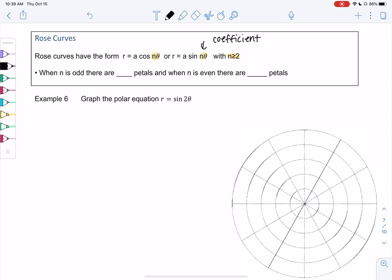They're going to look like flowers. When n is odd, we'll have n petals. And when n is even, there will be 2n petals, so 2 times n.